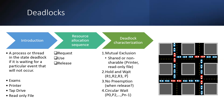The second condition for deadlock is: for example, process P1 requires resources R1, R2, and R3. R1 and R2 are already allocated and available to it, but it is waiting for R3. The second condition is Hold and Wait — the process holds some resources and waits for others.